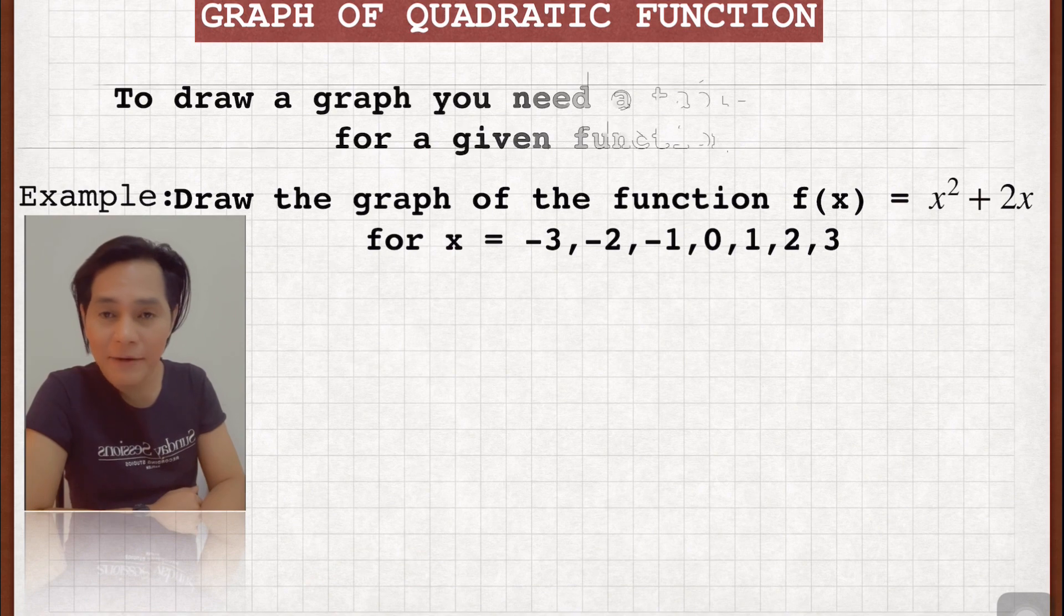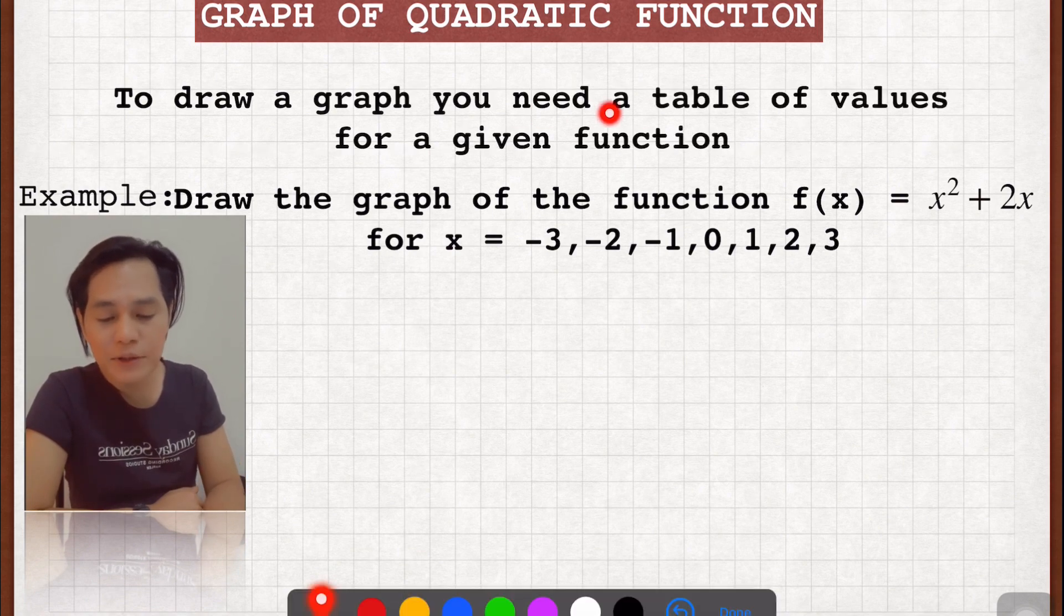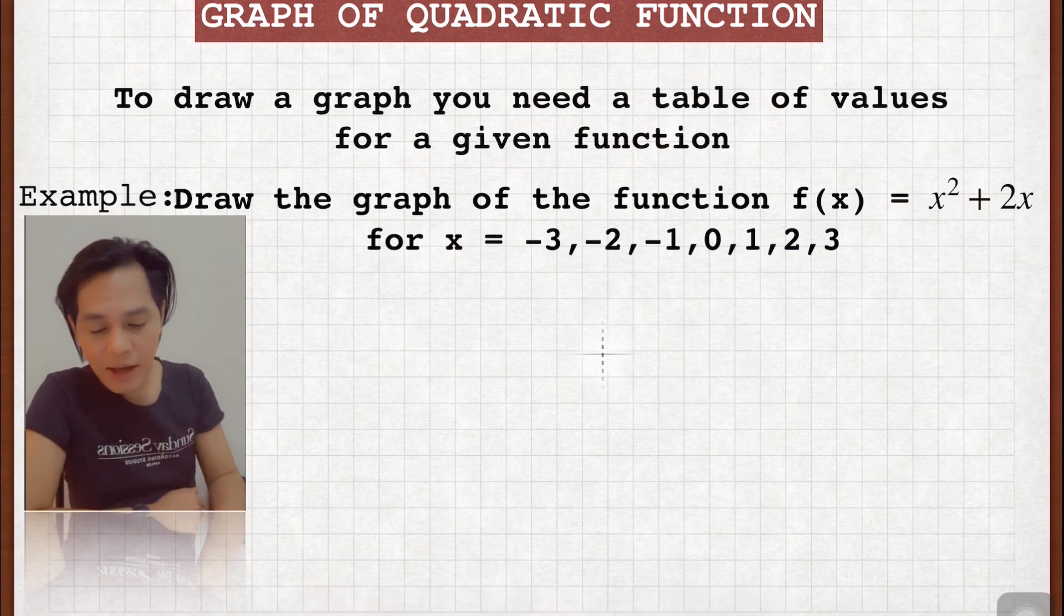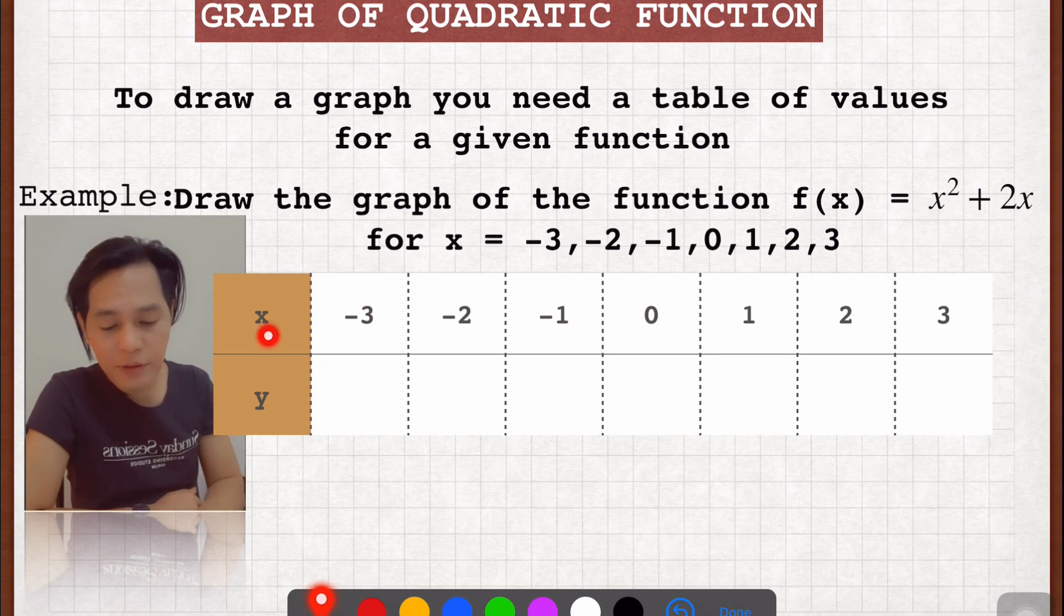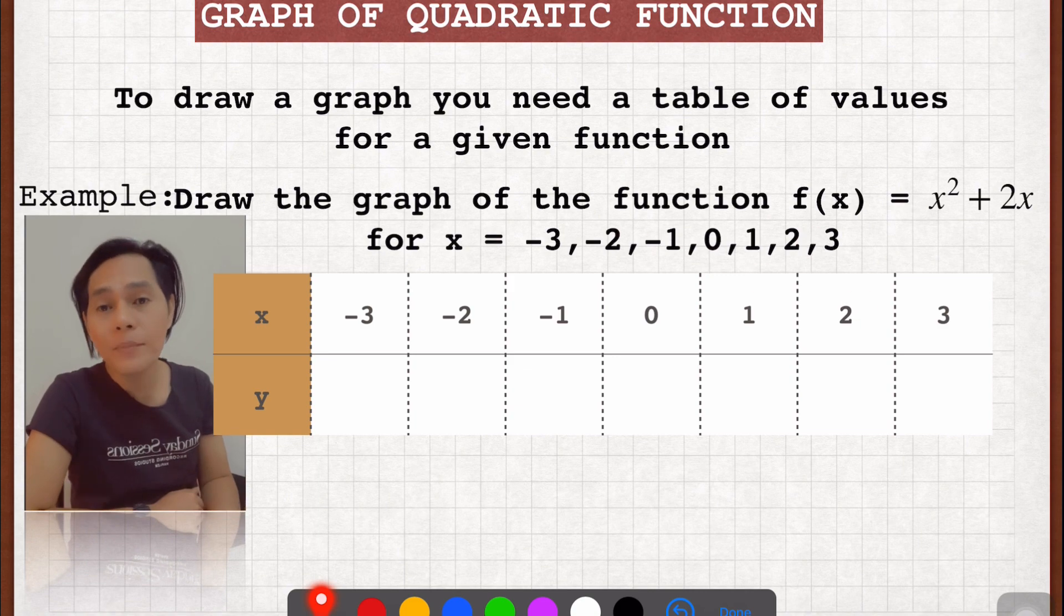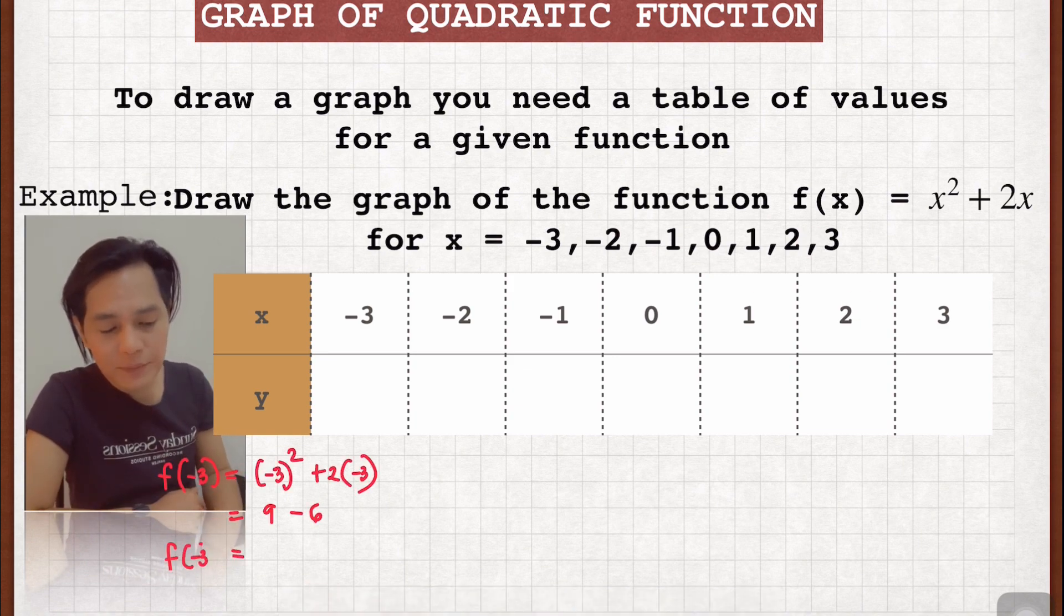Now, in order to draw a graph, you need a table of values for a given function. I have here a table. I'm putting all the values of x here: negative 3, negative 2, negative 1, 0, 1, 2, and 3.